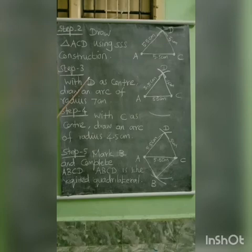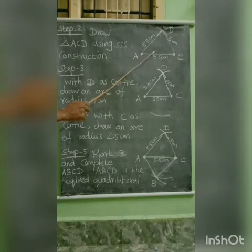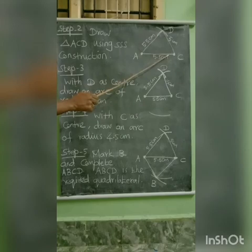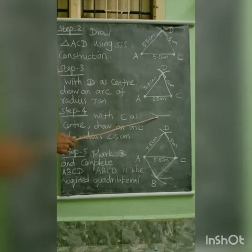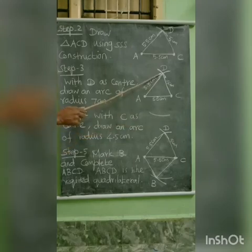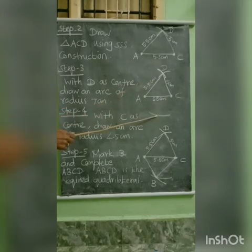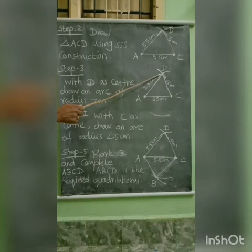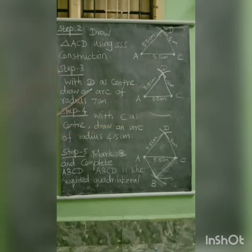In the third step, already we complete this triangle form. Now, we want another one vertex, that is B. Now, take D as center. DB length is that diagonal, BD is 7 cm is given. Take D as center with radius 7 cm to draw an arc. Step 3: with D as center, draw an arc of radius 7 cm.